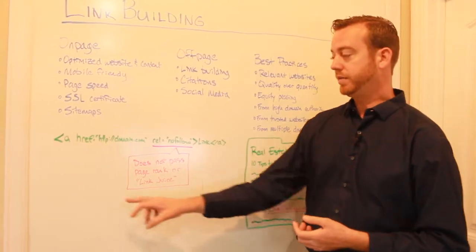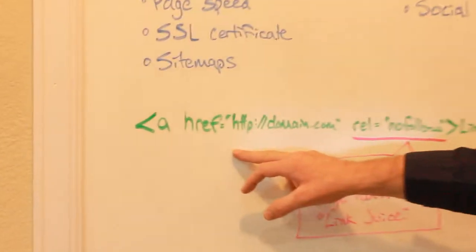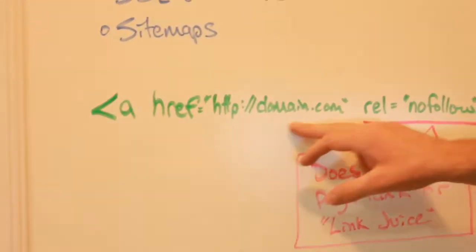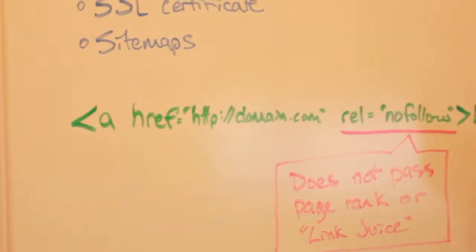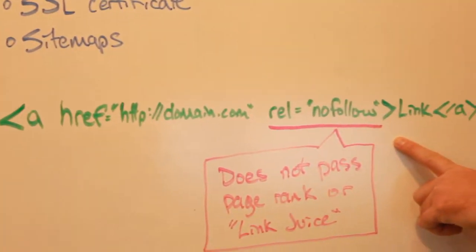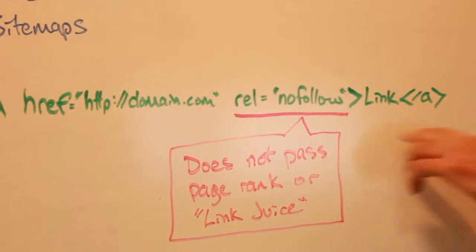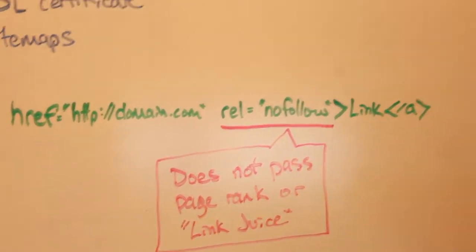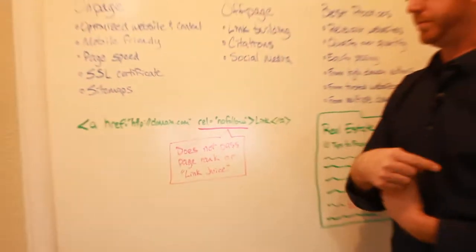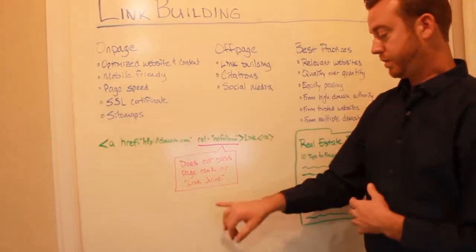And what this means is when you have a link, here's the HTML code for a link. It's going to point to say your domain name. But then they throw a nofollow tag on your link. What that's telling Google is do not pass any page rank or authority from my website to this website.